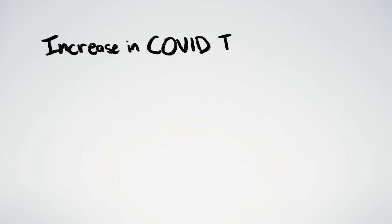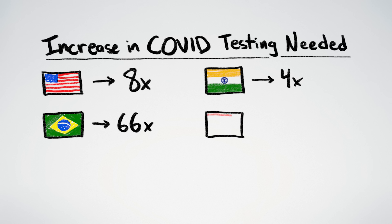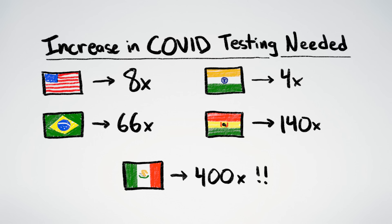According to public health experts at Harvard and Brown University, in the fall of 2020 the US needed to do 8 times more testing to successfully suppress COVID-19, India needed to do 4 times more testing, Brazil needed to do 66 times more testing, Bolivia needed to do 140 times more testing, and Mexico needed to do over 400 times more testing.